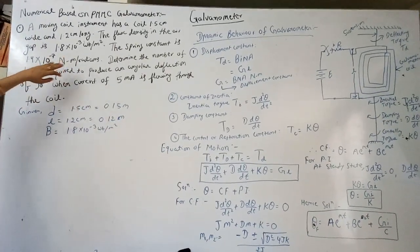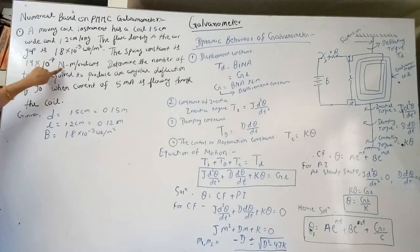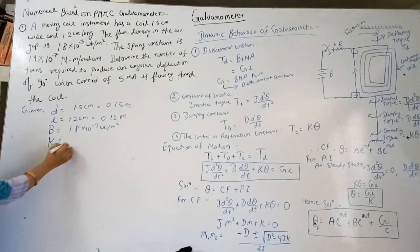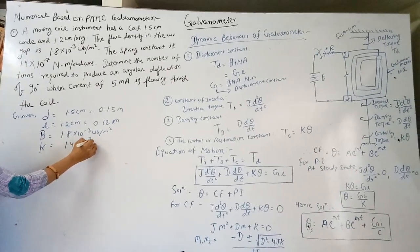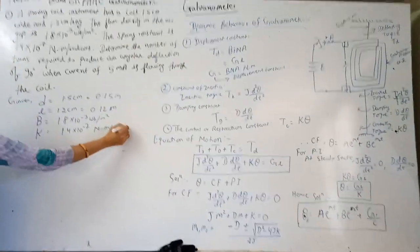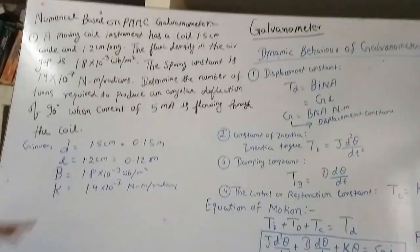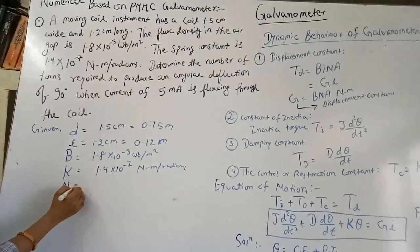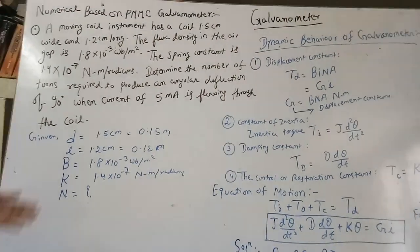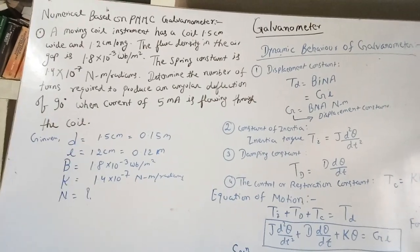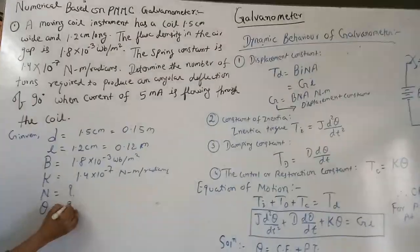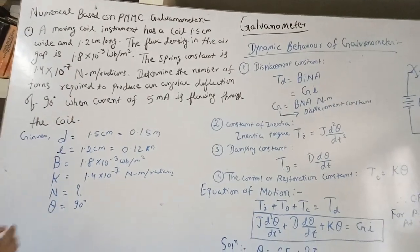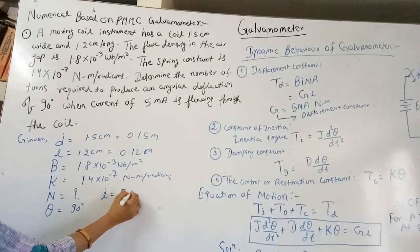The spring constant is 1.4 × 10⁻⁷ Newton meter per radian. Now, what is being asked: determine the number of turns N required to produce an angular deflection of 90 degrees (θ = 90°) when a current of 5 milliampere is flowing through the coil, i.e., I = 5 mA.